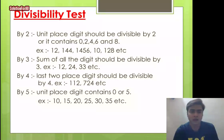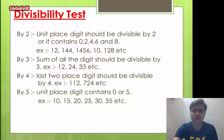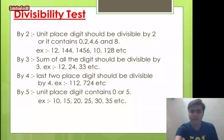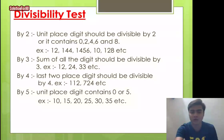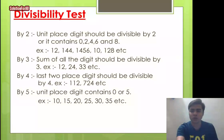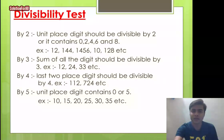To check divisibility by 3: sum all the digits, and if the sum is divisible by 3, then the number is divisible by 3. For example, 12: 1 + 2 = 3, divisible by 3. 24: 2 + 4 = 6, divisible by 3. 33: 3 + 3 = 6, divisible by 3. This rule applies to larger numbers as well.